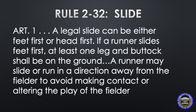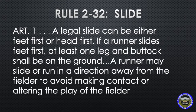We'll start out by taking a look at the rule. This is Rule 232, the definition of a slide. As we know, a runner is never required to slide, and we'll start out by looking at what a legal slide is, which can be either feet-first or head-first. If a runner does decide to slide feet-first, at least one leg and buttock shall be on the ground, and what it doesn't say there is prior to contact with the fielder. A runner may also slide in a direction away from the fielder to avoid making contact or altering the play.